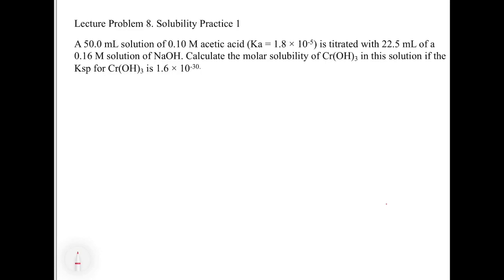In the first problem, a 50 mL solution of 0.1 molar acetic acid is titrated with 22.5 mL of a 0.16 molar solution of NaOH. Then it says calculate the molar solubility of chromium hydroxide in the solution if the Ksp for chromium hydroxide is 1.6 times 10 to the minus 30. So we're trying to figure out how soluble chromium hydroxide is in a solution where we also did a titration.